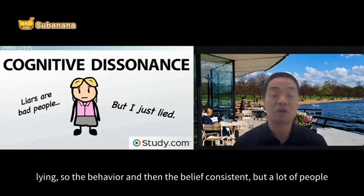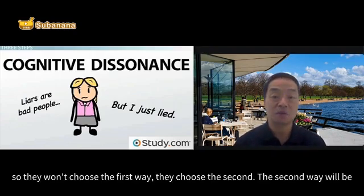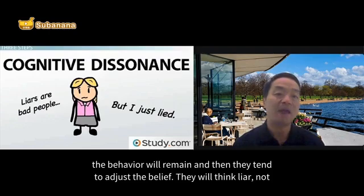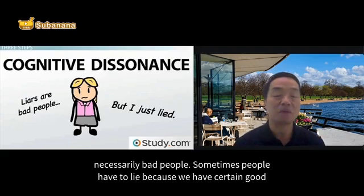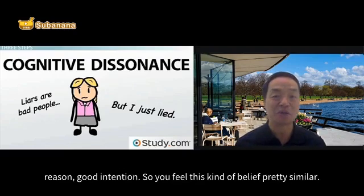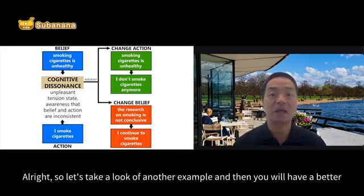For the small girl example, she has two ways to go. First, she could stop lying — once she stops lying, her behavior and belief become consistent. But a lot of people won't choose that first way. They choose the second way: keep the behavior the same and adjust the belief instead. They will think liars are not necessarily bad people, because sometimes people have to lie for good reasons or good intentions.